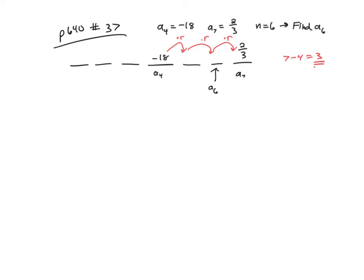So what I have then is a sub 4 multiplied by r to the 3rd is what would give me a to the 7th. In other words, if I start with negative 18, I've got to multiply times r to the 3rd in order to get two-thirds.